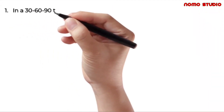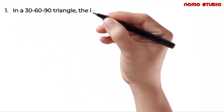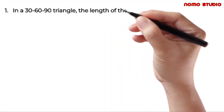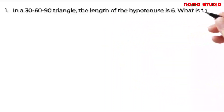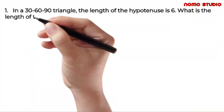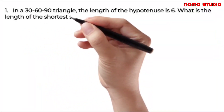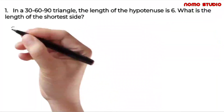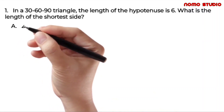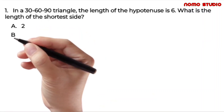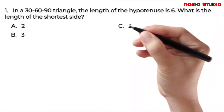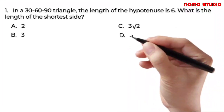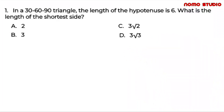In a 30-60-90 triangle, the length of the hypotenuse is equal to 6. What is the length of the shortest side? A: Is it 2? Letter B: Is it 3? Letter C: 3 square root of 2. Or Letter D: 3 square root of 3.